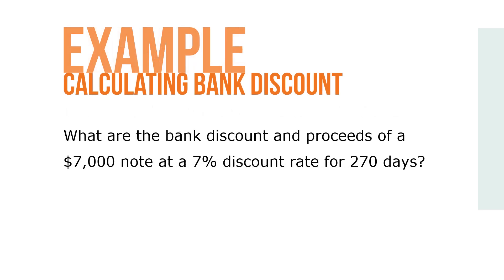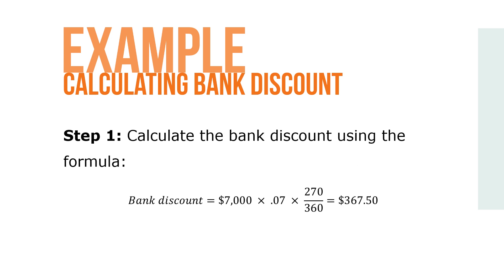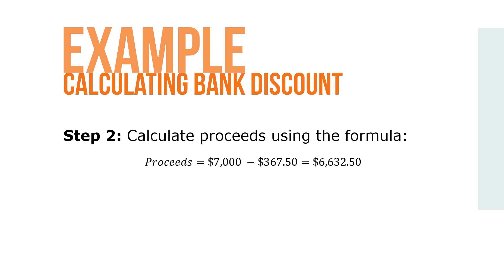Here's an example. What are the bank discount and proceeds of a $7,000 note at 7% discount rate for 270 days? Step 1: Calculate the bank discount using the formula. Bank discount equals $7,000 times 0.07 times 270 over 360, which equals $367.50. Step 2: Calculate the proceeds using the formula. Proceeds equals $7,000 minus $367.50, which equals $6,632.50.